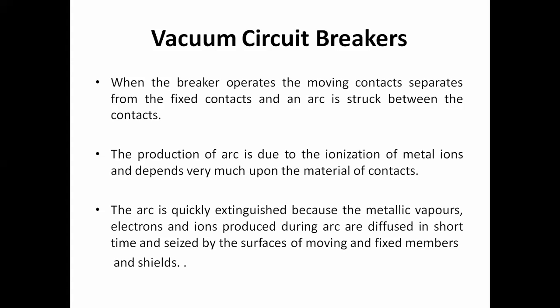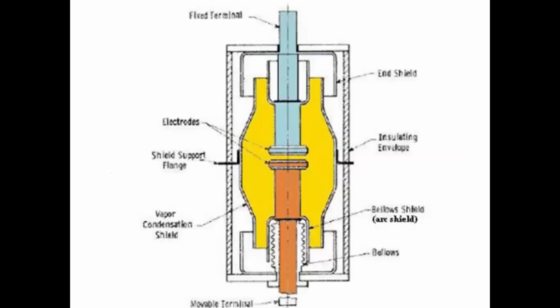You have to quench this arc in the minimum possible shortest time. Otherwise, the temperature of the circuit breaker increases very rapidly, which will affect the system and in turn the circuit breaker itself. Whenever there is an arc struck between the moving contact and the fixed contact, this arc must be quenched in the minimum possible shortest time so that it no longer flows between the two contacts. When the arc does not flow, the temperature does not rise and hence the system and circuit breaker can operate safely.